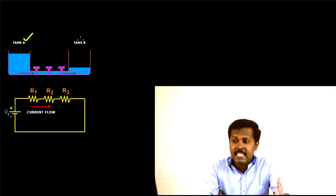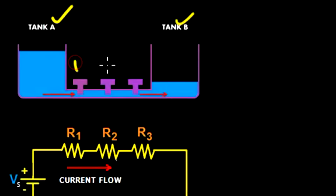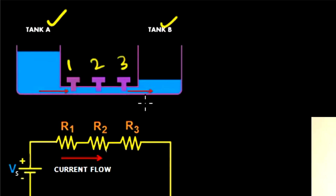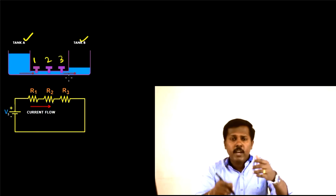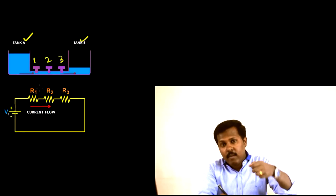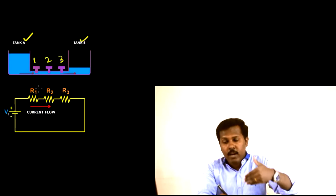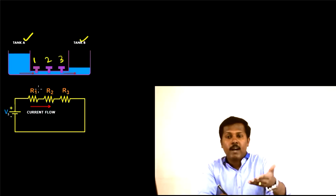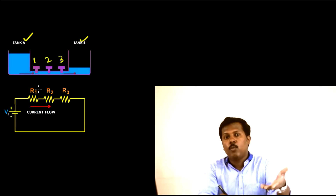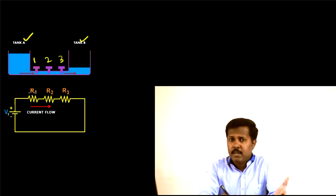Now consider the situation where the pipe connecting Tank A and Tank B has three gate valves connected one after another. These kinds of connections are called series connections because the gate valves are connected one by one and there is only a single water flow through the pipe. As you connect the first gate valve, the water flow is reduced a little; connecting the second reduces it further; and connecting the third reduces it again. Each gate valve has its own contribution towards reducing the speed of water flow in the pipe.